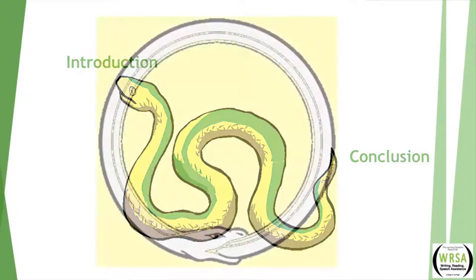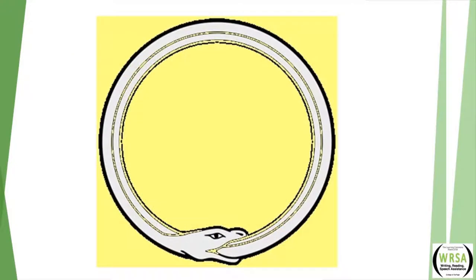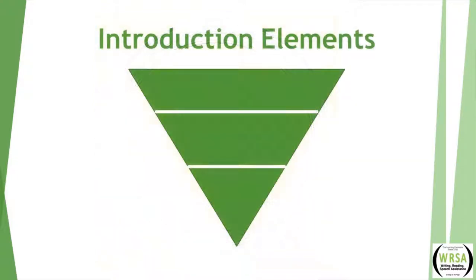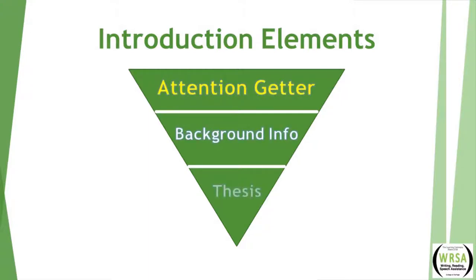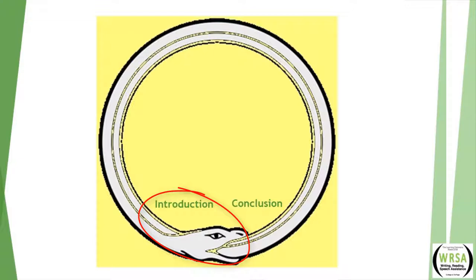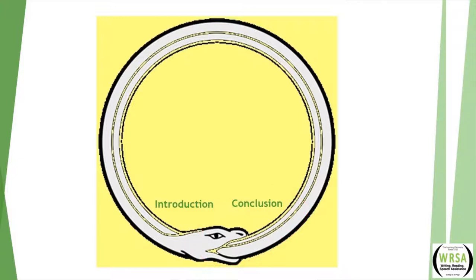Consider thinking of a presentation in a circular fashion, where the moment you think of your attention getter — your snake's head — you are also thinking about how you might wrap it up on a high note, or your snake's tail. When talking about the introduction, we want to include three elements: the attention getter, some background information, and then the thesis. For this presentation, we're going to focus on ways to get one's attention creatively — the snake's head — and also the clincher, or the snake's tail.